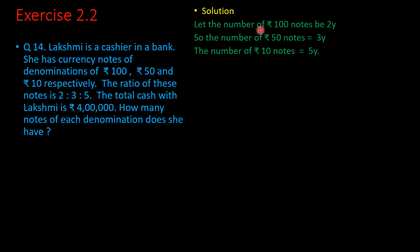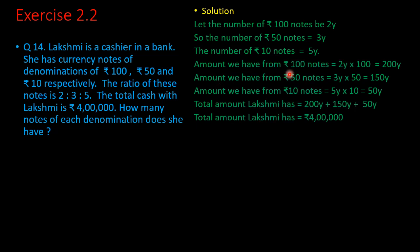Solution. Let the number of rupees 100 notes be 2y. We have taken 2y instead of y because the ratio connected with 100 rupee notes is 2. So the number of rupees 50 notes is 3y, and the number of rupees 10 notes is 5y. Amount from 100 rupee notes: 2y × 100 = 200y. Amount from 50 rupee notes: 3y × 50 = 150y. Amount from 10 rupee notes: 5y × 10 = 50y.